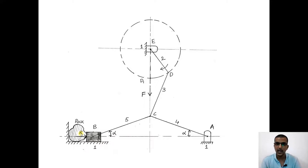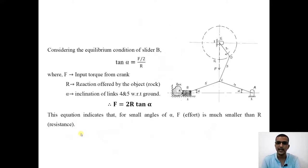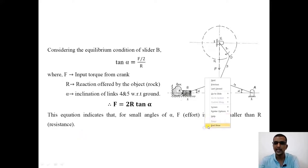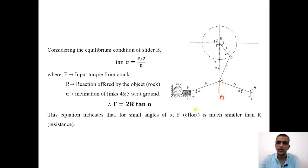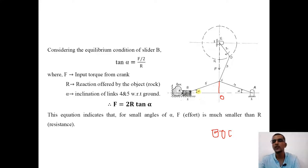Let us understand the mathematics behind it. Taking link number five, angle alpha is defined here. Forming a triangle BOC, we define tan alpha. Tan is opposite divided by adjacent for the angle. The opposite side corresponds to the vertical force component, and the adjacent side corresponds to the resistance offered by the stone.